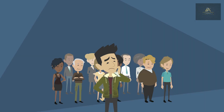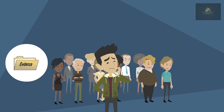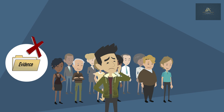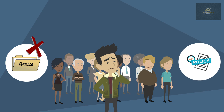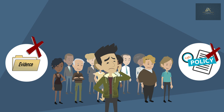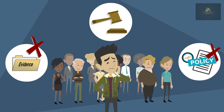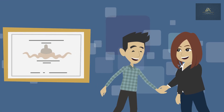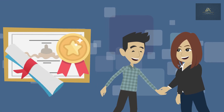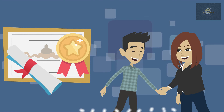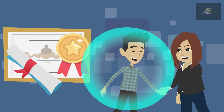In group insurance, evidence of insurability is usually not required if a participant enrolls during the open enrollment period. Participants under the plan do not receive a policy, nor do they own or control the policy. Instead, they receive certificates indicating that they are included in the coverage.